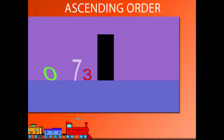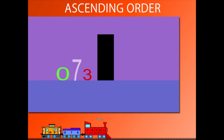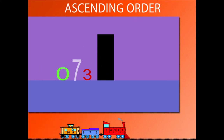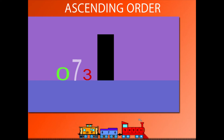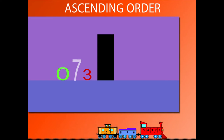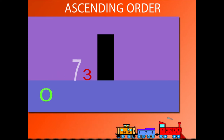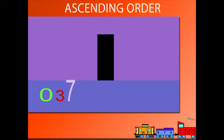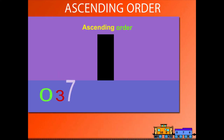0 is the smallest of the three. So in ascending order, they will read as 0, 3, 7.